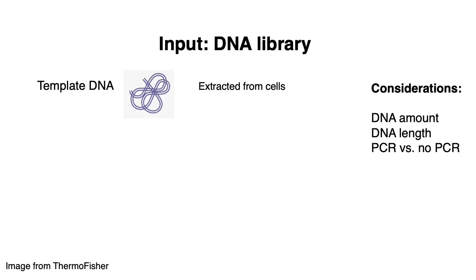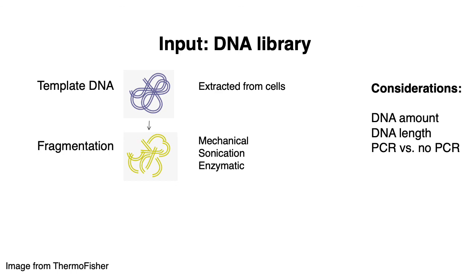For generating a DNA library, the basic steps involve extracting template DNA or a genome from a bunch of cells, followed by fragmentation. Current technologies are not able to sequence an entire genome all in one go, so you have to fragment your original genome into smaller pieces and then sequence the individual pieces. This fragmentation can be done by mechanical shearing, sonication, or enzyme digestion.